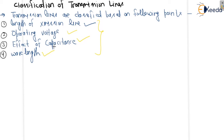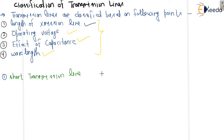So this is the classification of transmission line, but in general the transmission line is divided into three types: the first one is the short transmission line. For the short transmission line, lf — where lf is the multiplying factor — lf is less than 4000. Always remember, lf is the multiplying factor.